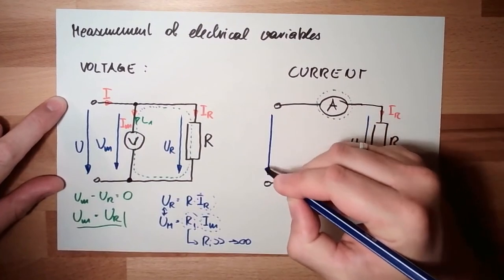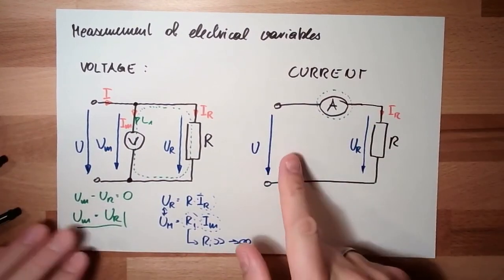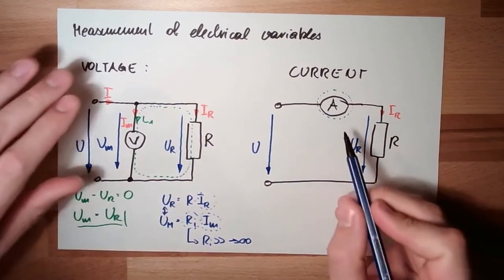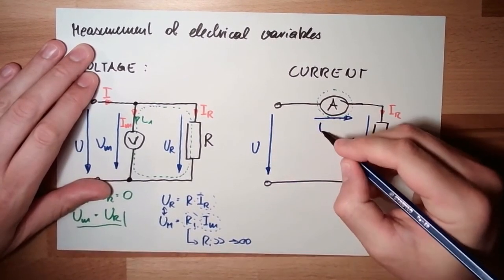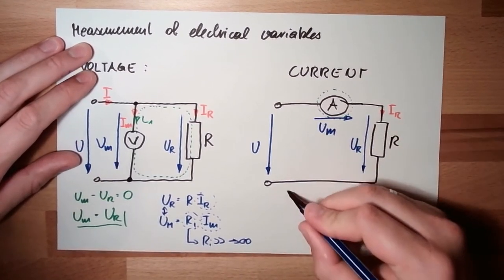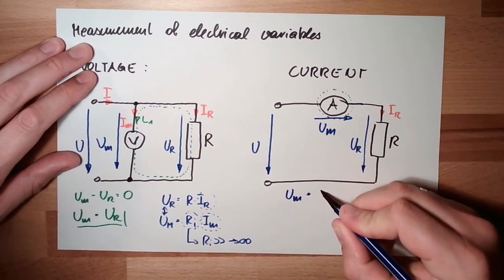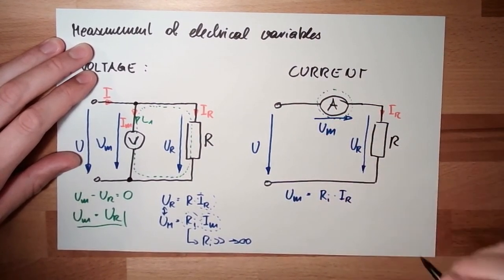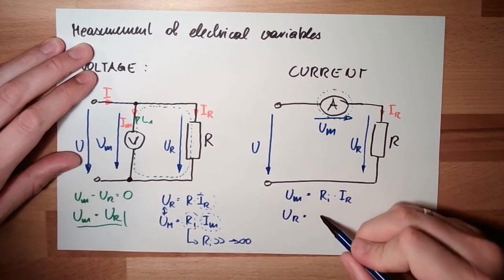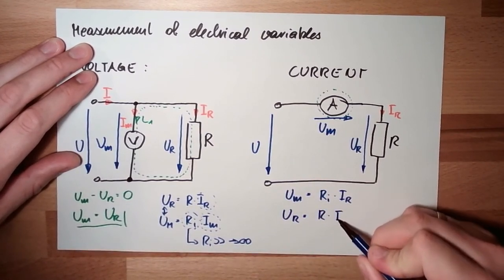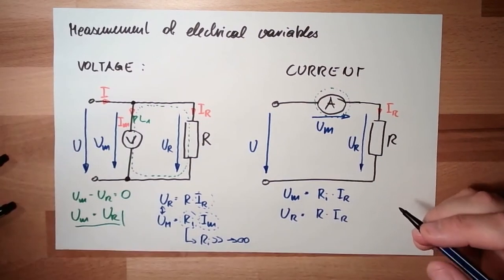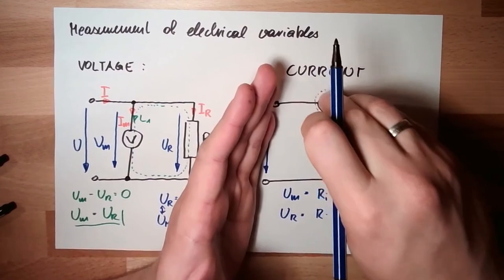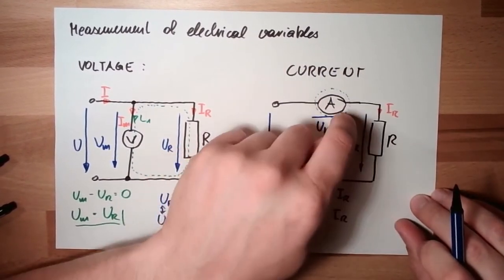Here we again have this U, and here it's the current. And now, the same thing applies as well. Here we have a measurement voltage. And the measurement voltage is again Ri, the internal resistance of this ampere meter multiplied by Ir. And Ur is the same like R multiplied by Ir. That just stays the same.